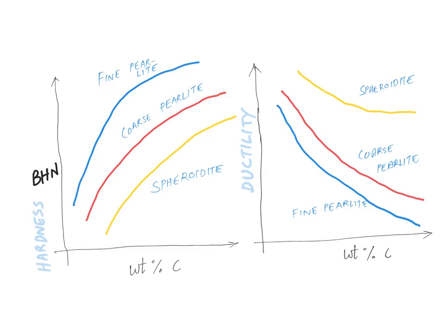So as you can see here, for a given weight percentage of carbon, fine pearlite is more stronger, more phase boundary area. Then comes coarse pearlite, less phase boundary area. Then spheroidite comes the least because it has the least phase boundary area, because in this particular microstructure cementite is in the form of spheres.